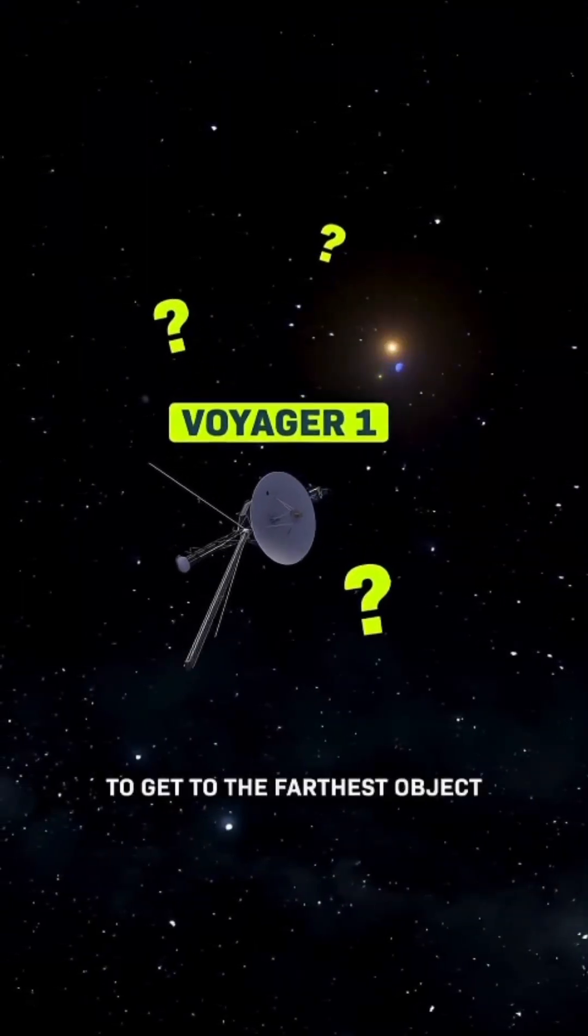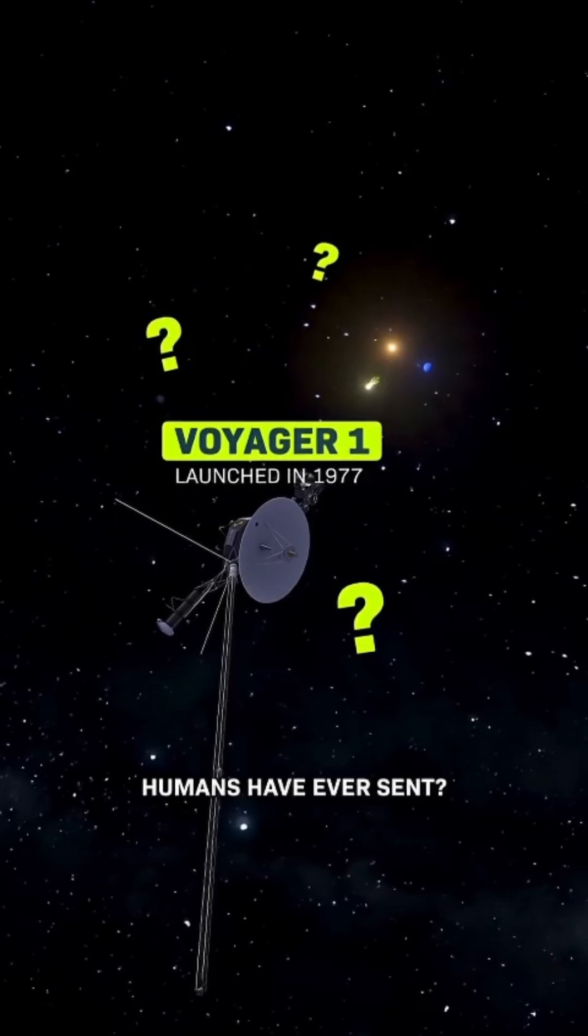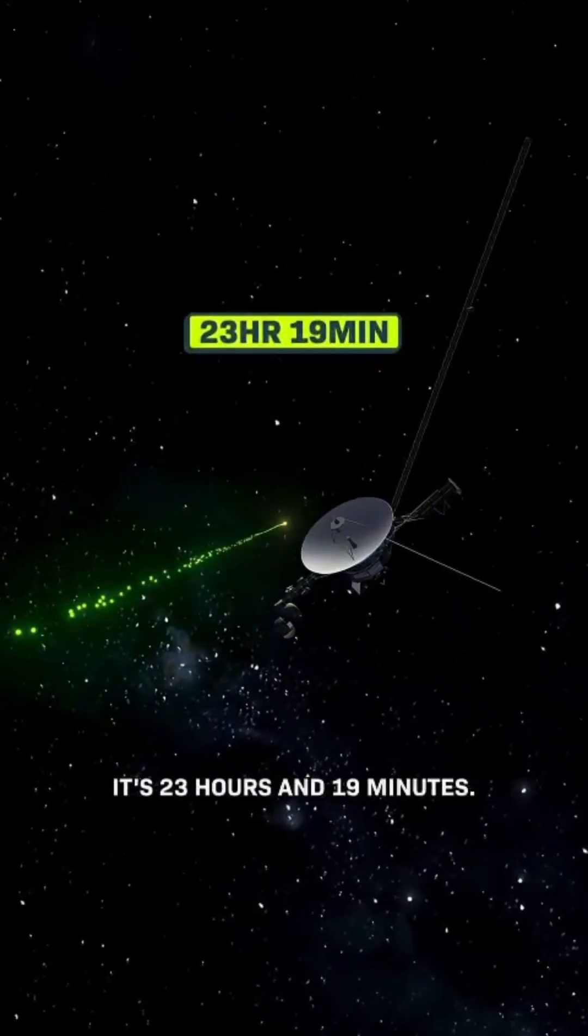How long do you think it takes you at the speed of light to get to the farthest object humans have ever sent? It's 23 hours and 19 minutes.